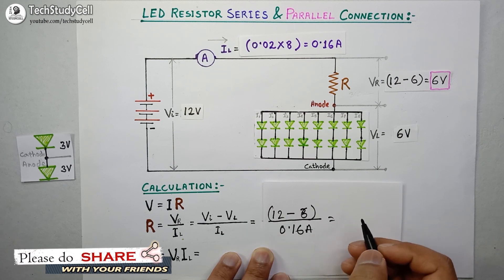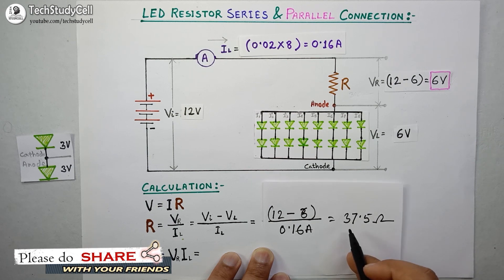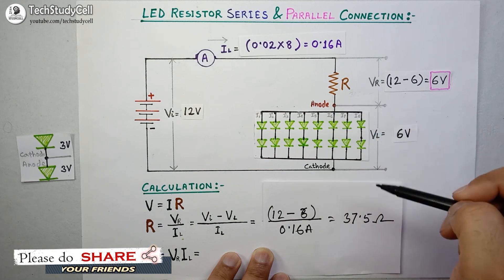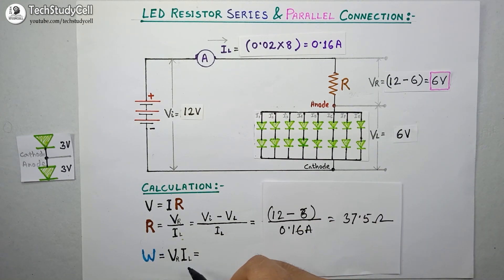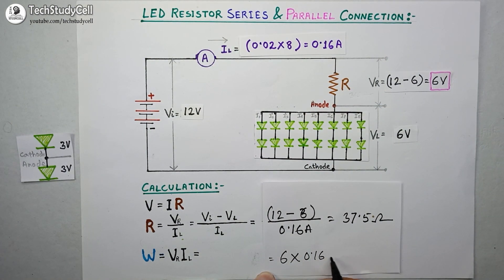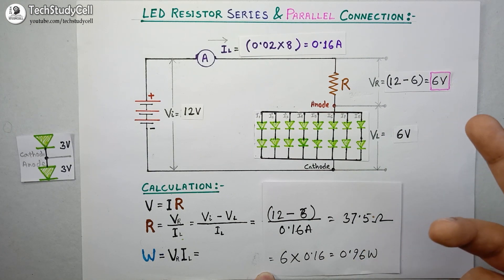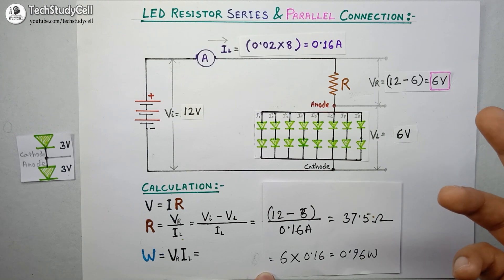If we calculate this value we get 37.5 ohms, so we need to use a 37.5 ohm resistor for this circuit. Now we will calculate the wattage rating of the resistor. The voltage drop across the resistor is 6 volts, and multiplying that by the current of 0.16 amperes gives 0.96 watts. So the wattage rating of the resistor must be greater than 0.96 watts — we need to use a 1 watt resistor. We cannot use a 0.5 watt or 0.25 watt resistor.